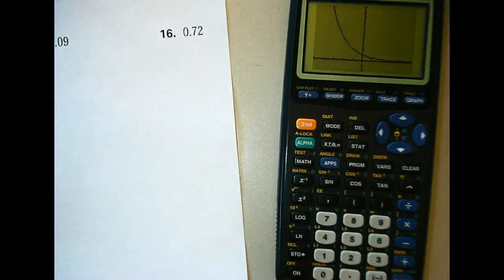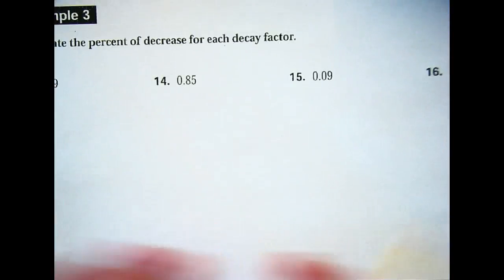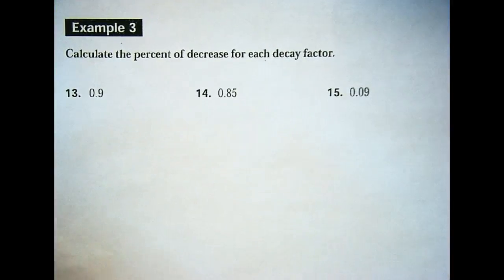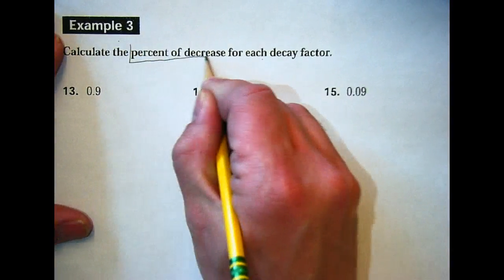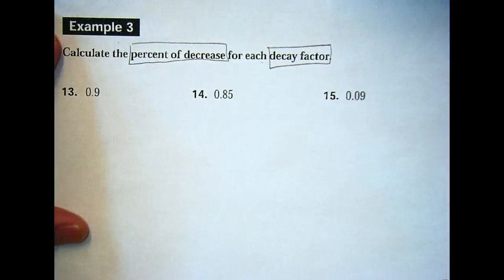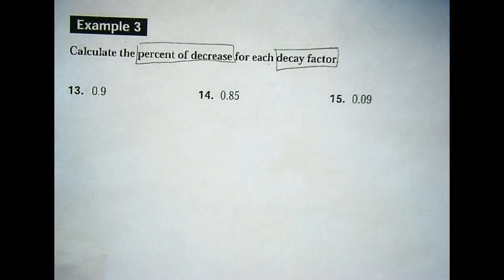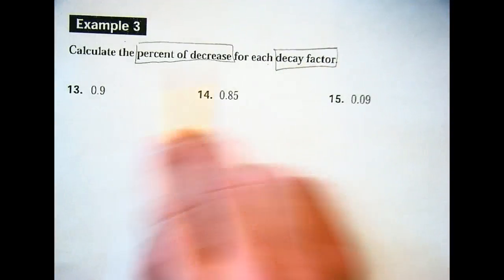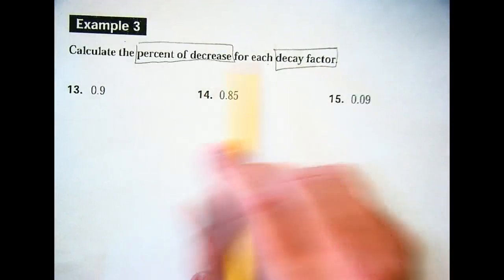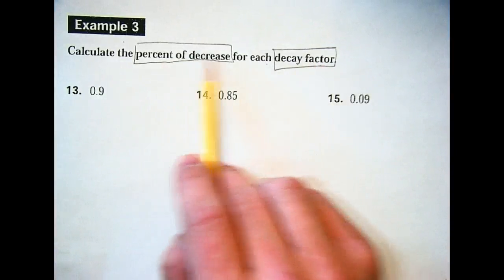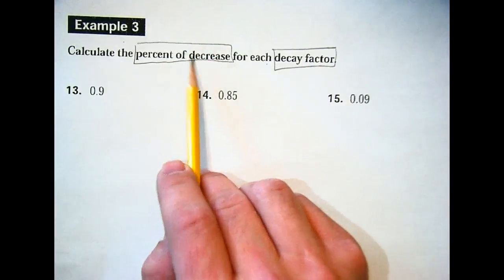They're amazing, I know. They look cool. All right. Moving on. Here we go. Next part, example three says, calculate the percent of decrease for each decay factor. Percent of decrease. There are two terms you need to know the difference of. Percent of decrease and decay factor. One is a decimal. One's a percent. Now, one of these terms means percent, and one means decimal. Now, tell me when to stop when I get to the one that means percent. Stop. Stop. Stop.